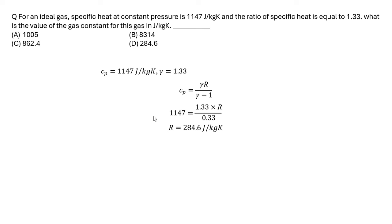The relationship CP = γR/(γ−1) has already been proved in Lecture 1. Applying it here confirms the gas constant R = 284.6 J/kg·K.